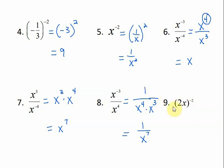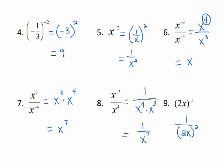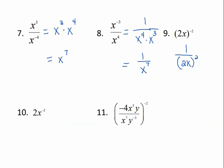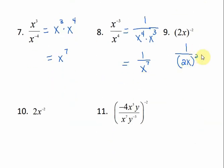In number 9, since the whole expression is being raised to the negative 2 power, that whole thing needs to be brought to the bottom to make the exponent positive. To show it's in the bottom, I put a 1 over it. Then I distribute that square and I get 1 over 4x squared for my answer.